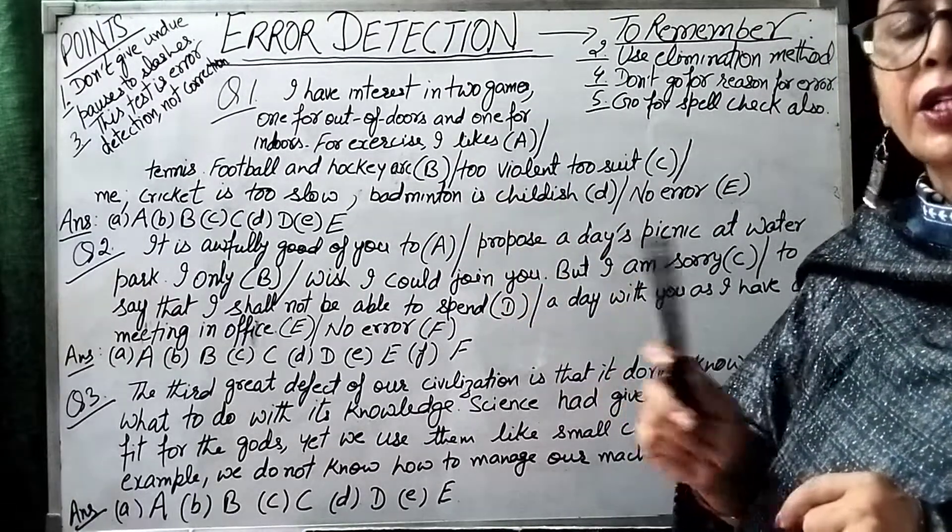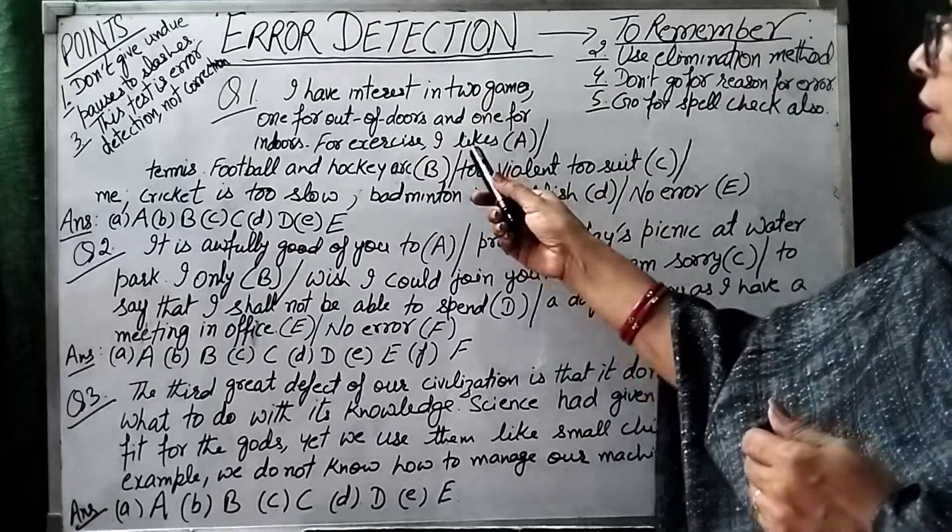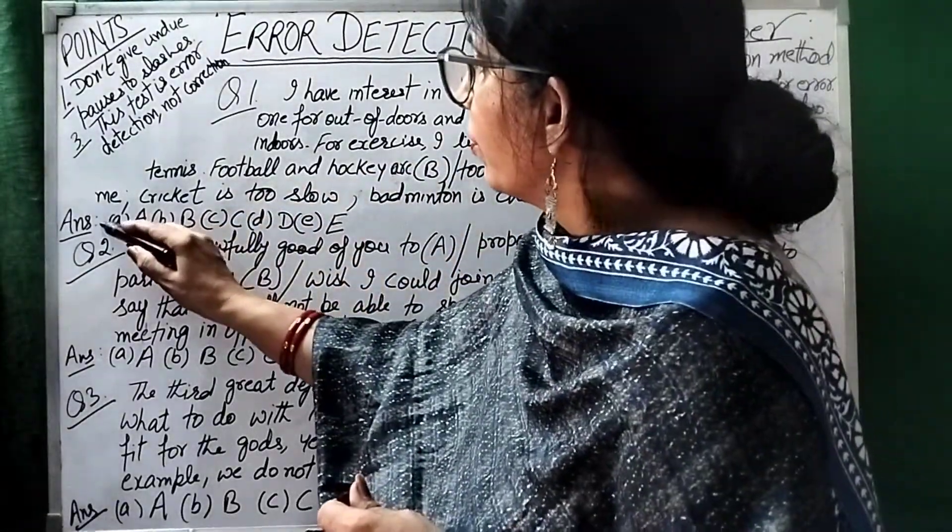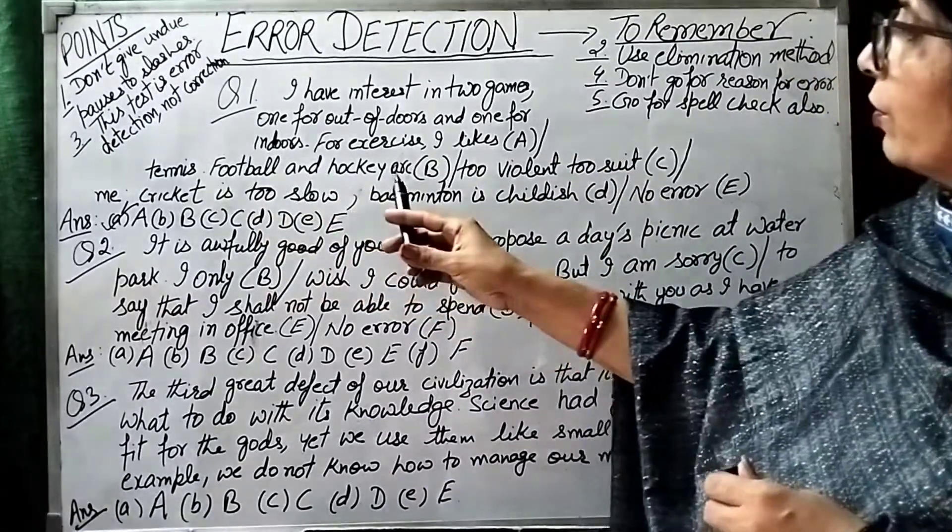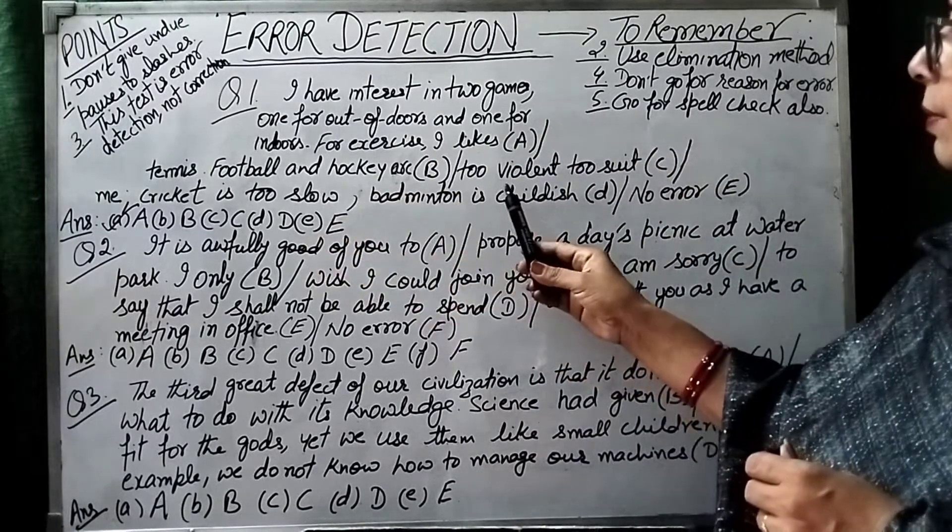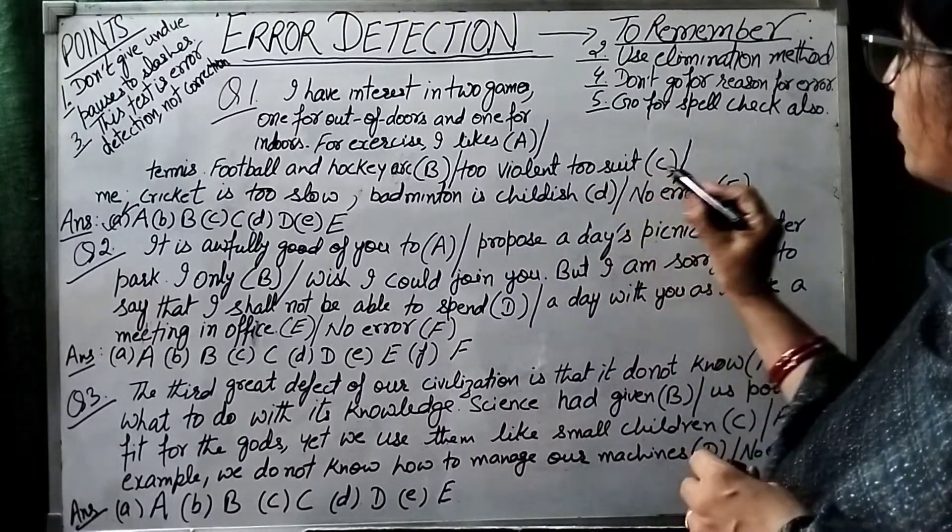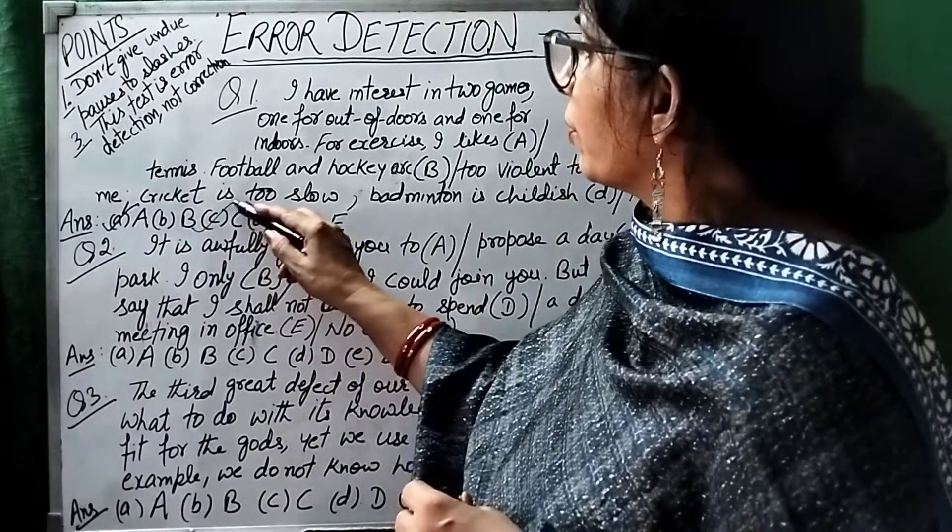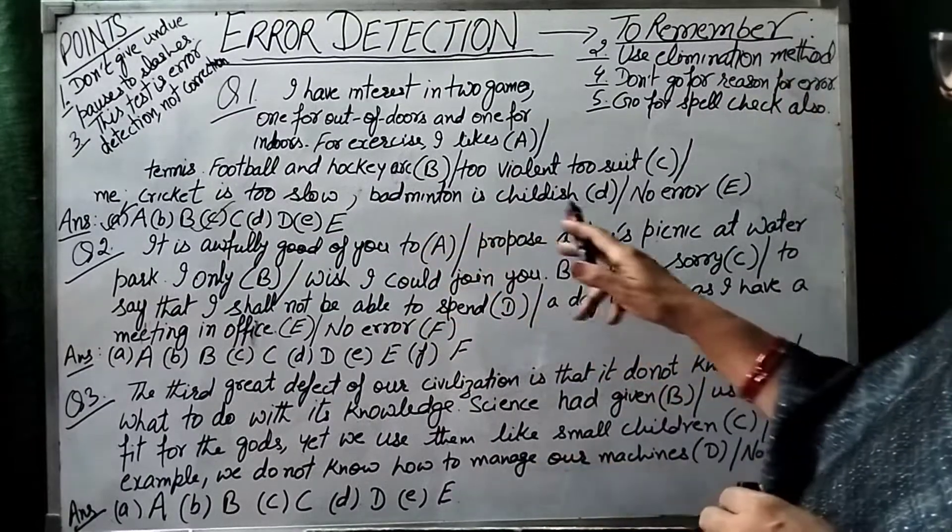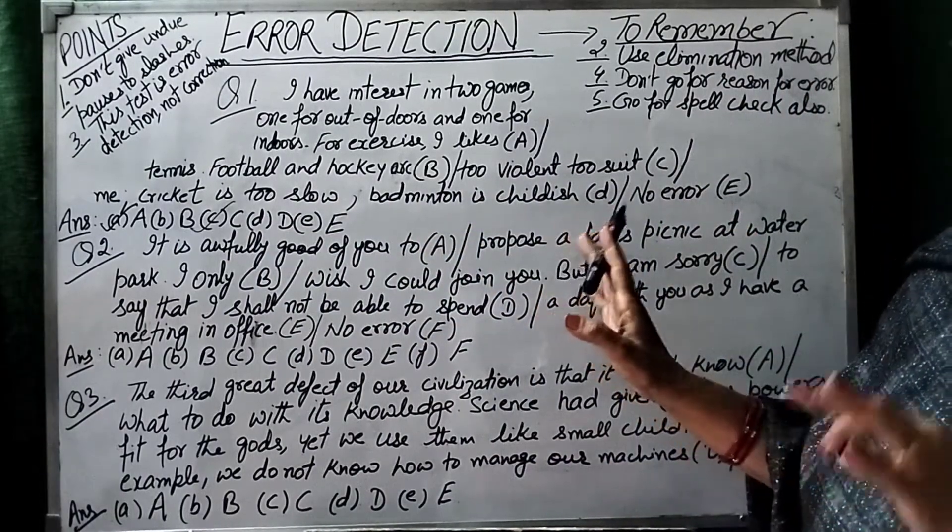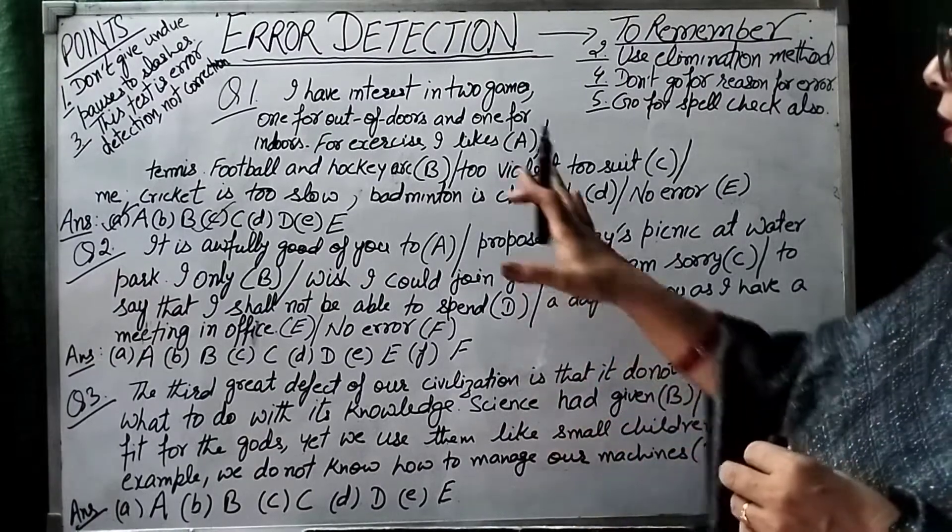This is our error. 'I like tennis' - not 'I like', but 'I like'. This is a mistake. If you are wrong, you will have to find or detect. You will detect that A is a mistake. Then you will have to mark the mistake. Football and hockey are too violent to suit me. I will have a mistake here - too violent and to suit - you have a double 'to', so that means C may be a mistake, so you tick C.